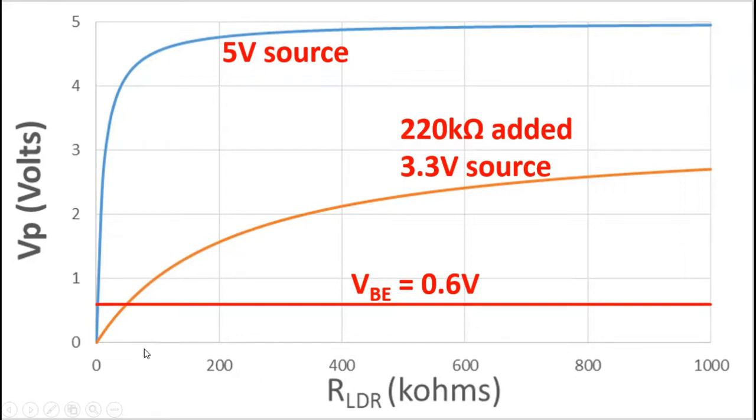Now the transistor we're using has a base to emitter saturation voltage of 0.6 volts. This is the minimum voltage, along with other conditions, that are needed to activate the transistor and allow the current to flow between the collector to the emitter. Now this is key because we wouldn't want to activate this voltage too early.